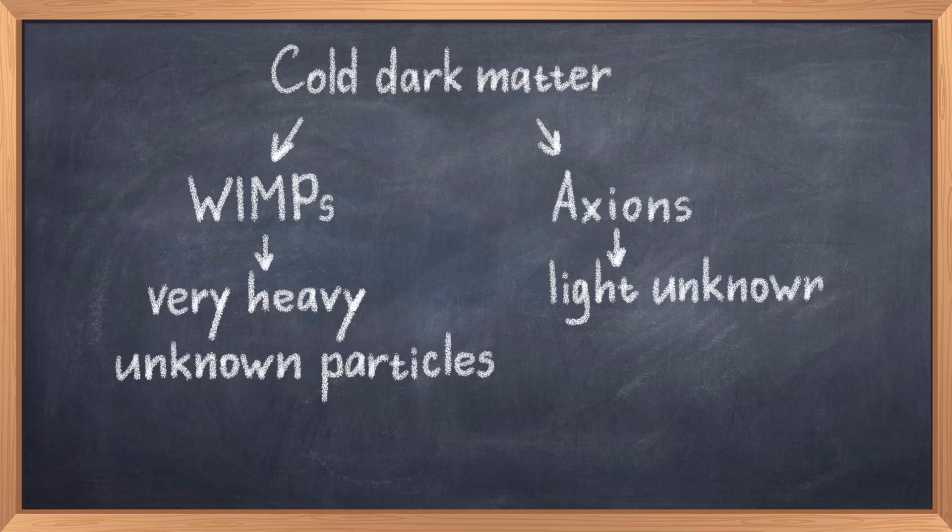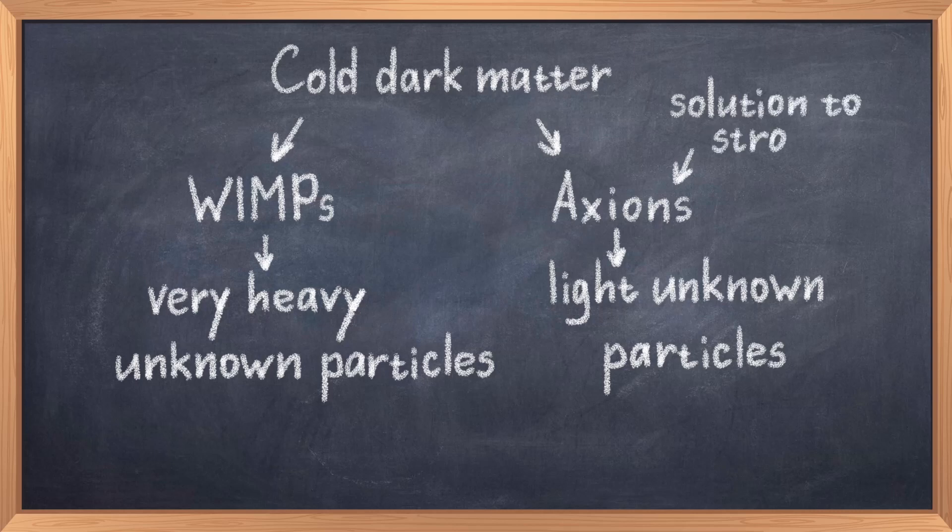The last thing to consider is axions, which is a rather light type of particle compared to WIMPs. This type of particle was originally proposed to resolve another big problem in physics called the strong CP problem, which we discussed in the video about beyond the standard model. But as with the neutrino solutions, it looks rather unlikely that there could be enough axions to account for the full dark matter density.